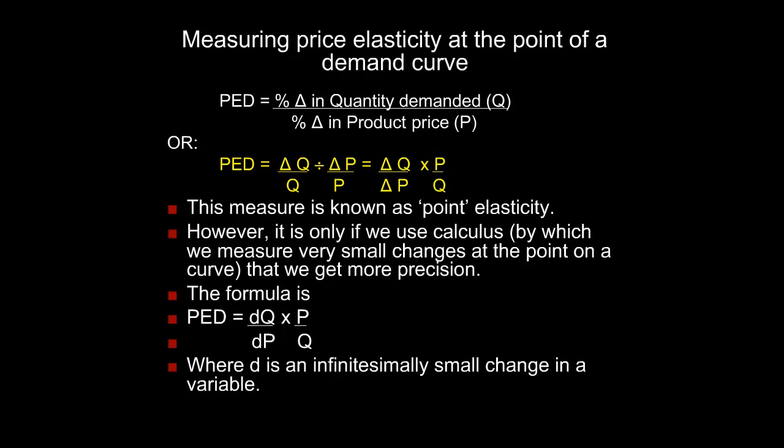The little triangle represents the word change. And we can rewrite that particular equation: price elasticity of demand is equal to the change in Q — change in quantity over the original quantity Q — divided by the change in price over the original price. We can rearrange that again to show the change in quantity over the change in price multiplied by the price over the quantity. This measure is known as point elasticity.